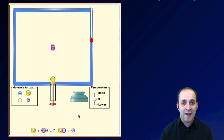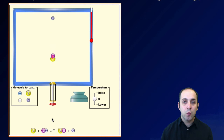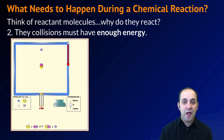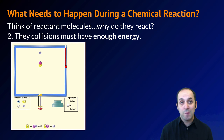Let's try this again and give it a little bit more energy. You can see we loaded it up, we'll let it go — and there's the reaction. You can see the reaction happening when the two reactant molecules collide with each other: a bond is broken and a new bond is made. So it's not just enough to collide, but you have to have enough energy when you collide in order for a bond to be broken and a new one to be made.